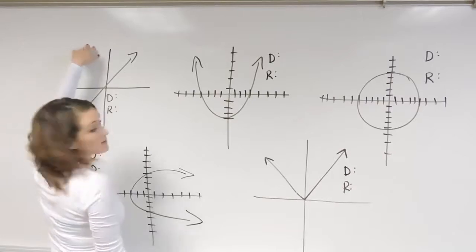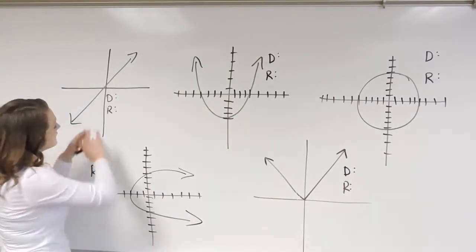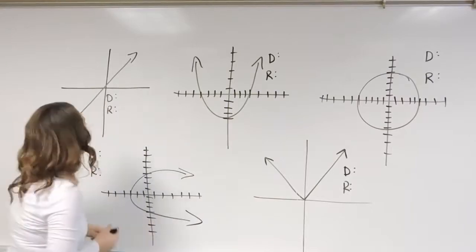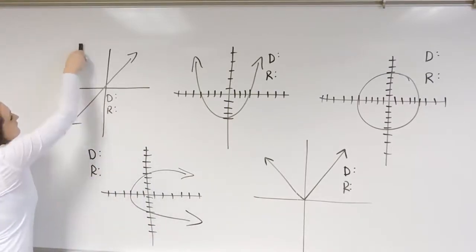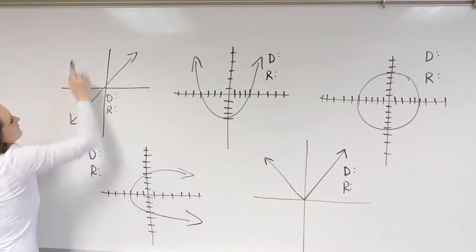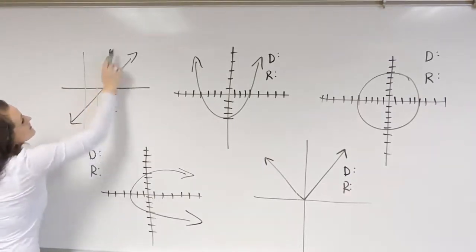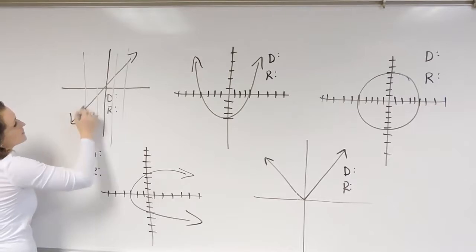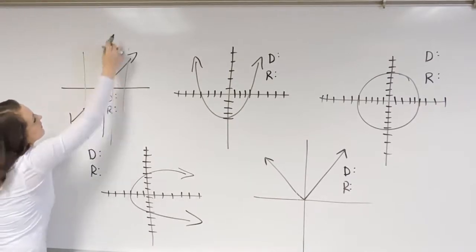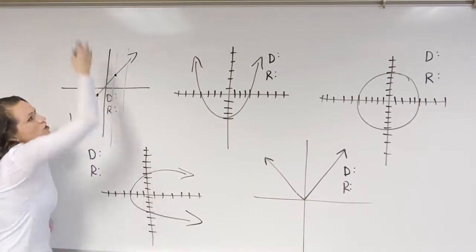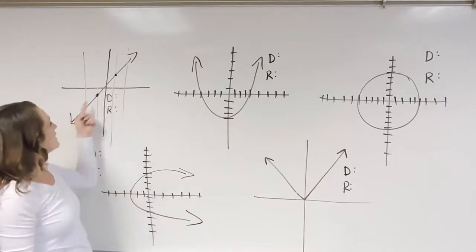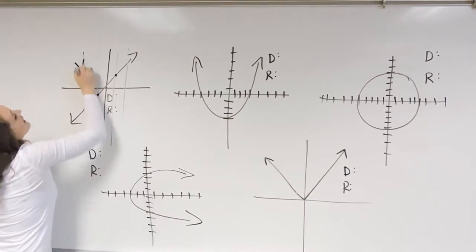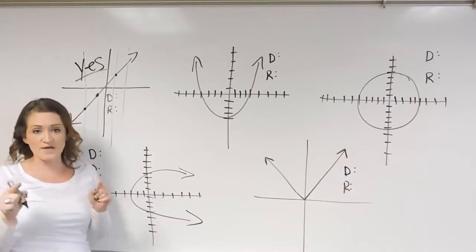Let's start with this graph over here. We need to figure out if it's a function, then state the domain and range. If I cut through a line anywhere on here, it cuts through once. Draw a line here — once. Pretty much anywhere I draw a line on this graph, it's only going to hit the graph one time. So for this one, yes, it is a function.